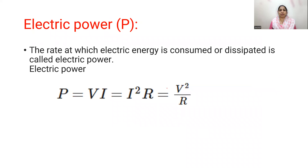Electric power is the rate of consumption of electrical energy. The formulas for power are: P equals VI, P equals I squared R, and P equals V squared by R.